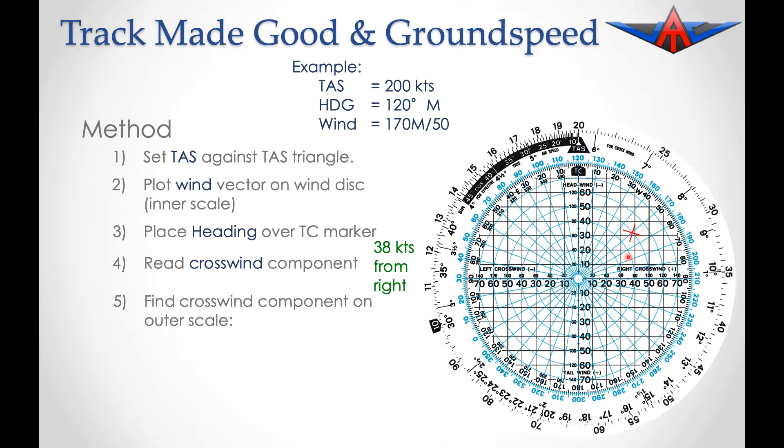We now need to read the crosswind component and convert it from a speed into an angle. We've got to find 38 knots position and equate it to an angle. We now read the drift angle from the number underneath that, which is 11 degrees, using the middle scale.